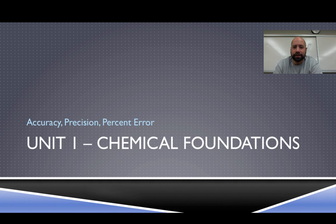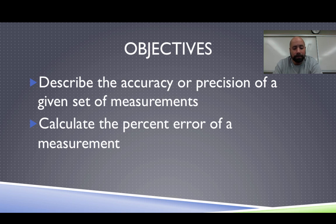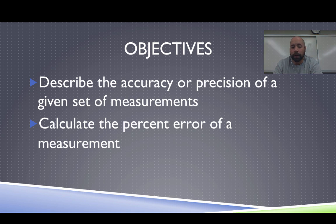Today we're going to be talking about accuracy, precision, and then measuring one of those two things with something called percent error. We want to describe and understand what accuracy and precision actually are and how they apply to different measurements in the lab. We also want to calculate a percent error and understand what that tells us about our data — whether it's accurate, precise, or both — and how we can use that to improve our experiments.